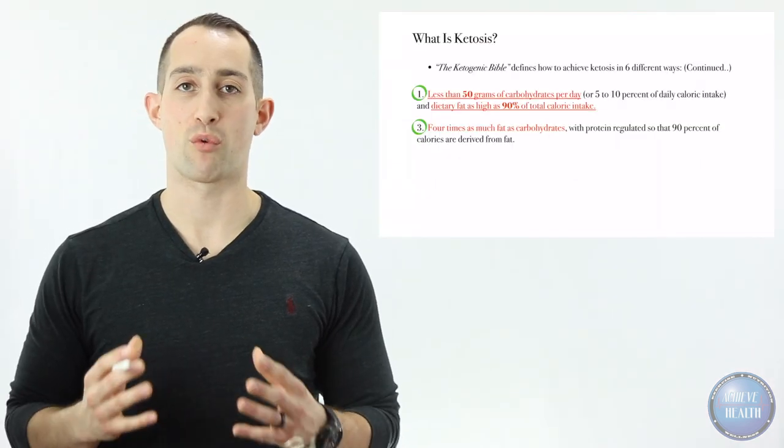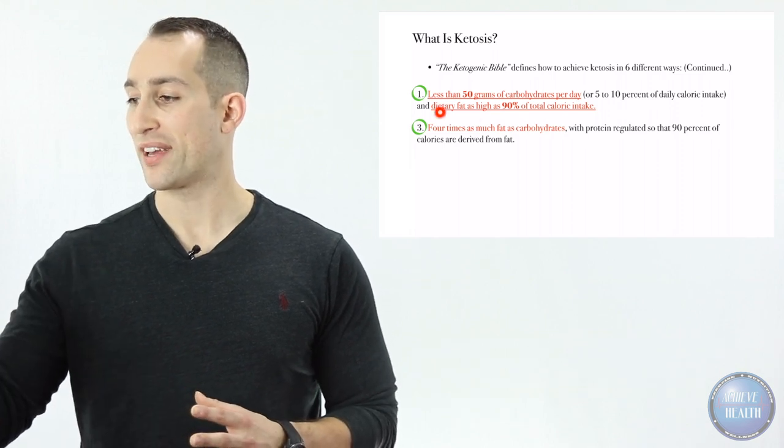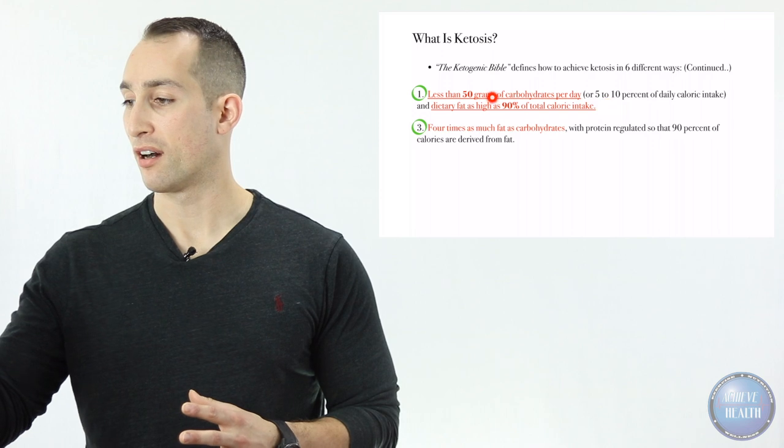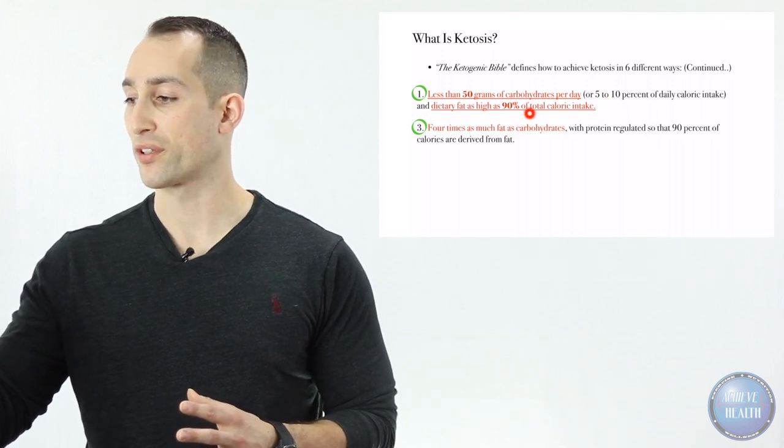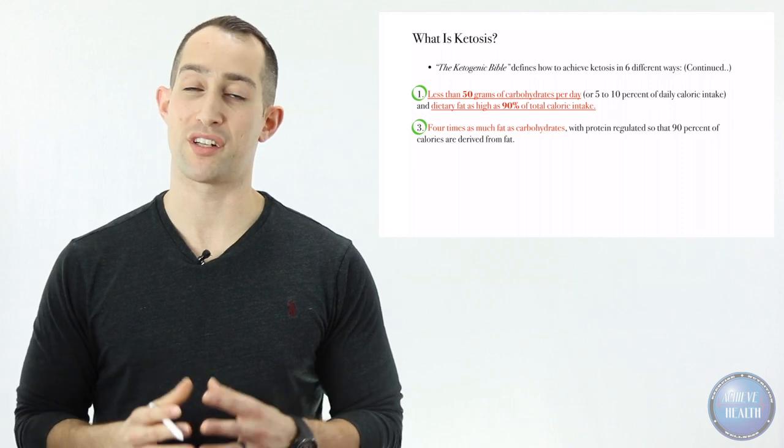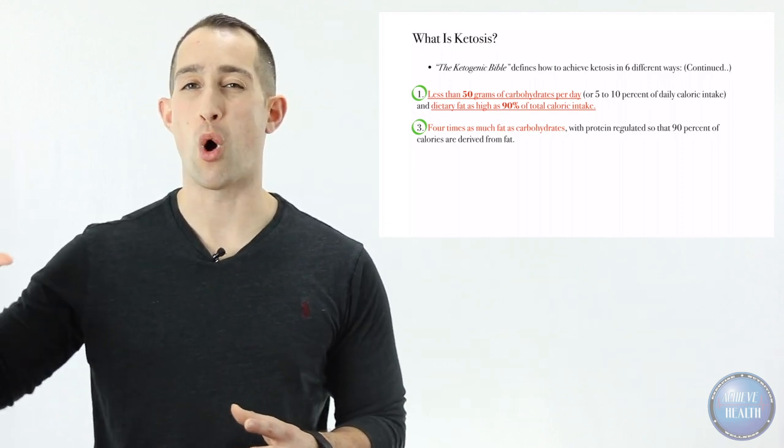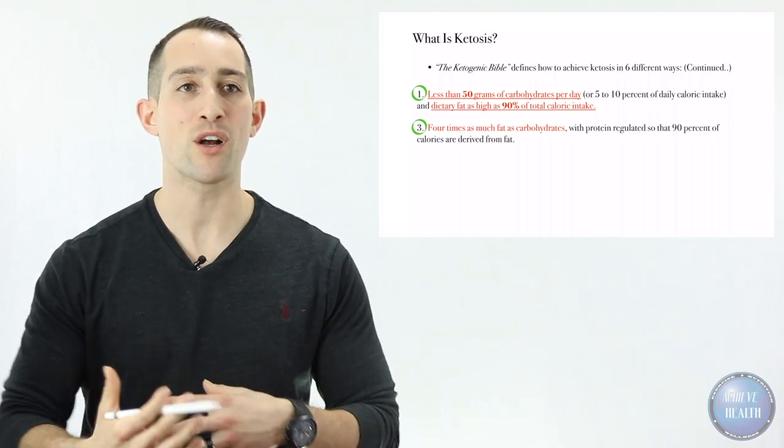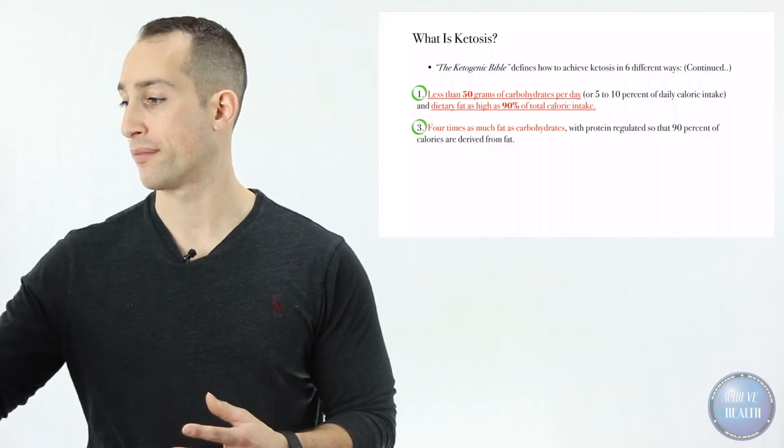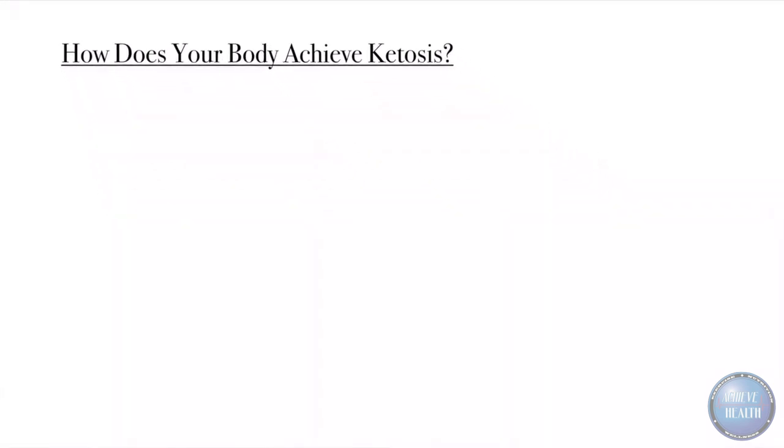Combined, these are two very great definitions and there is a little bit of overlap. If we're having a diet 90 percent of fat, it's very likely that we're going to have four times as much fat as carbohydrates. These are great definitions, so always refer to these two when explaining or trying to live your life by the ketogenic way. How does your body achieve ketosis?